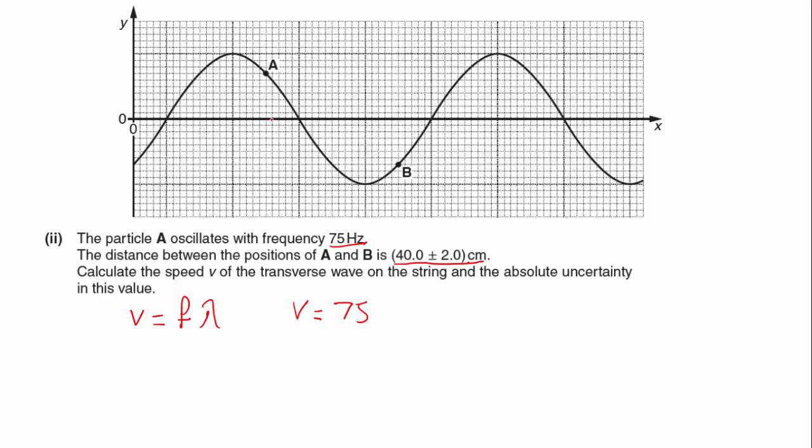Remember in the first part it says that this is half a wavelength, so our combined wavelength is going to be double this distance, which is 80 centimeters. But we're going to want to put that into meters, so let's make that look like a zero.